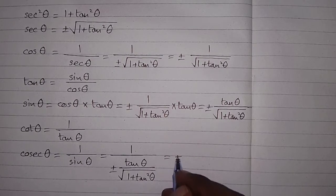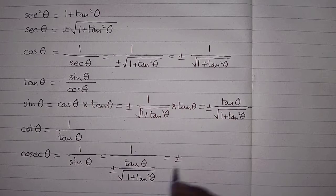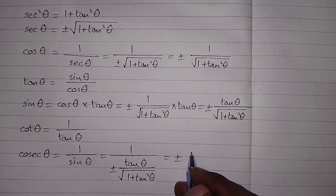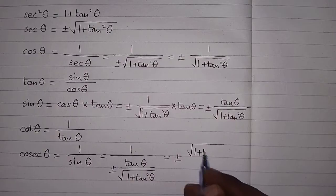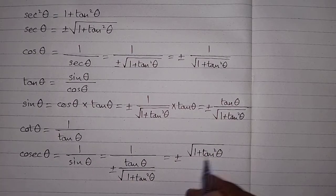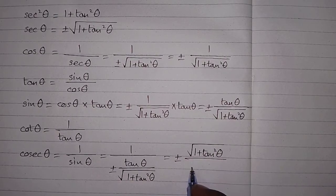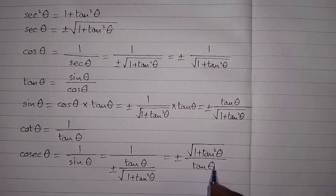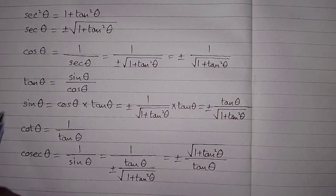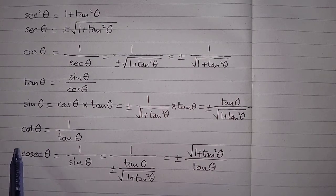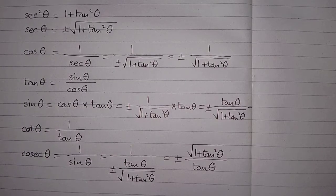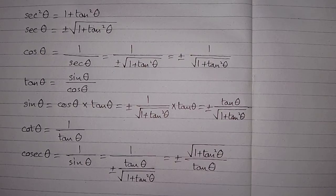So cosec theta is equal to plus or minus — taking the reciprocal of the denominator — square root of 1 plus tan squared theta upon tan theta. So we have sine theta, cos theta, cot theta, sec theta, and cosec theta, and we have found all the trigonometric ratios in terms of tan theta.